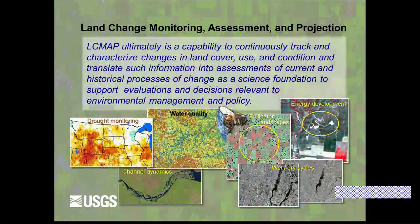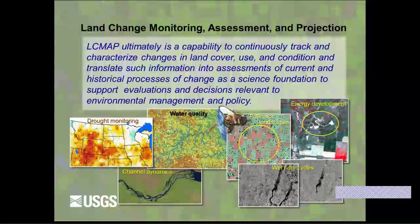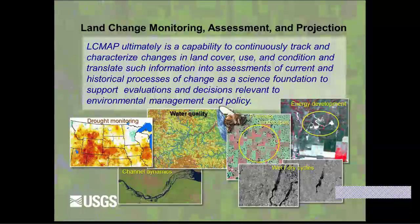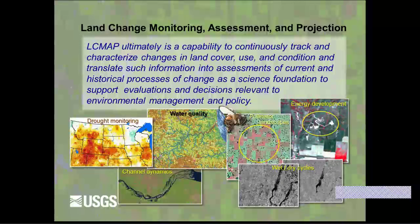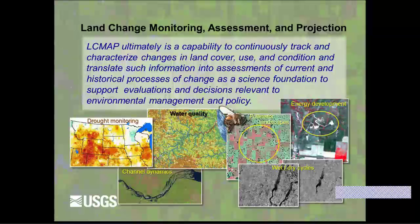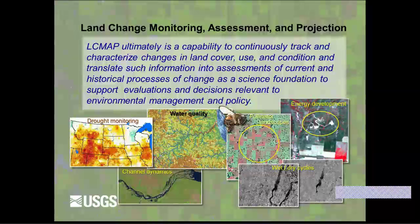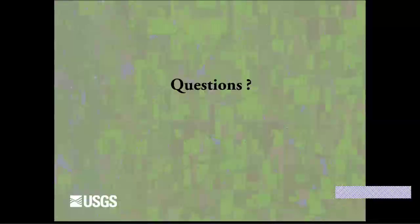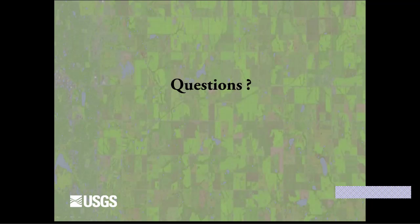This is a nutshell view of the LC-MAP initiative. It's ultimately this capability to continuously track and characterize changes over time so that we can translate the information into assessments that support evaluations and decisions that are relevant for environmental management and policy. We'll be rolling out different components of LC-MAP through time over the next several years so that people can start realizing the benefits. I plan to stop at this point so that there would be plenty of time for discussion. So I'm willing to take questions.